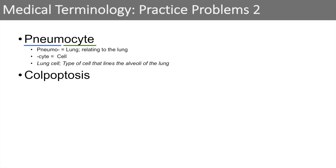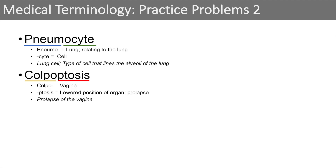The next word is colpoptosis. When we break it down, colpo — we've learned that colpo means vagina. And ptosis — we've learned that ptosis means lowered position of an organ or prolapse. So when we put this together, colpoptosis means prolapse of the vagina.